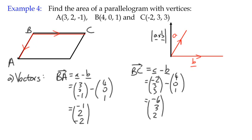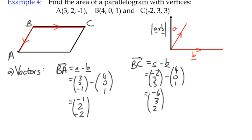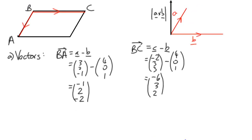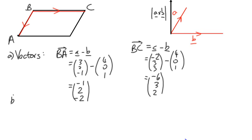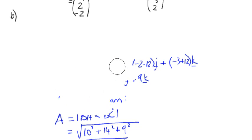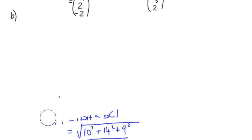So the first thing is we want to calculate the two vectors that we're going to use as our sides. Secondly, we want to calculate the vector product.